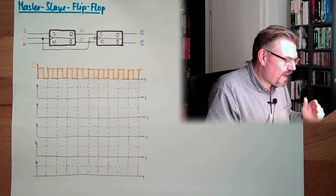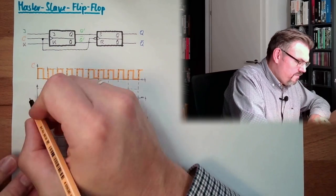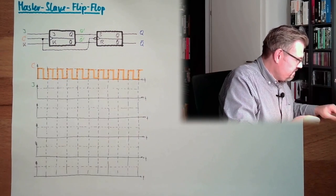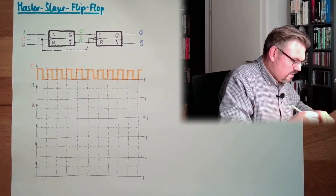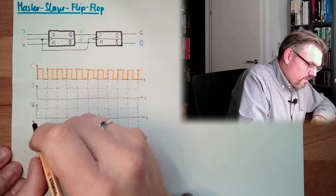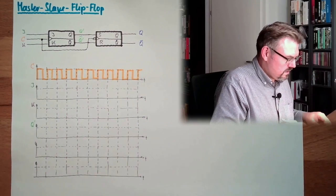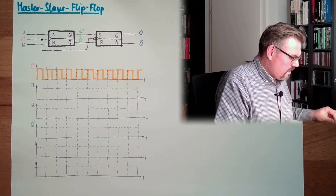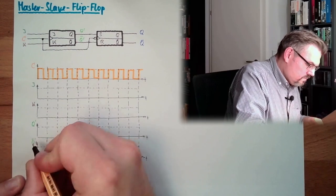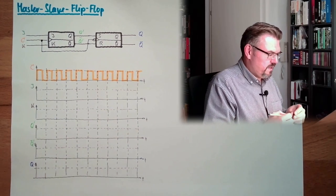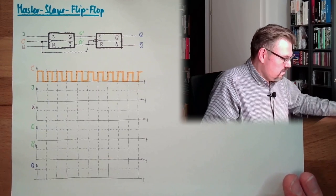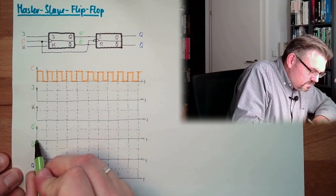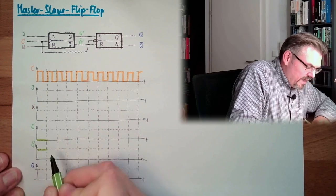Alright. So, let's analyze what this thing is doing. So, we have here J, we have here the K. We have here Q' and not Q'. And here, I will just write Q, because the other one is simply vice versa. So, let's assume Q' is zero. This is high, of course, then.